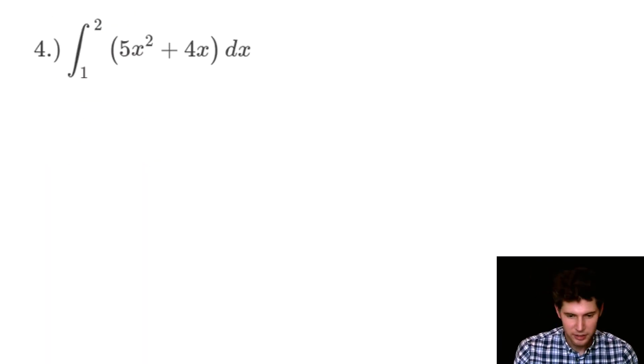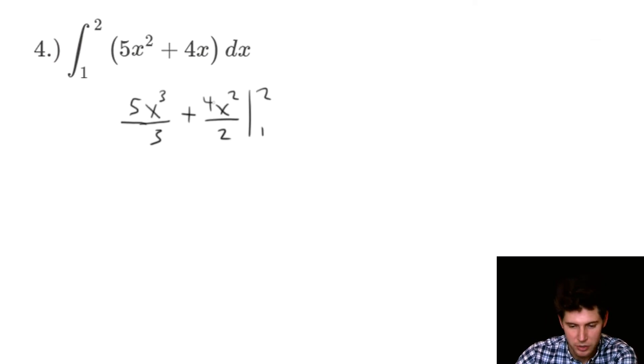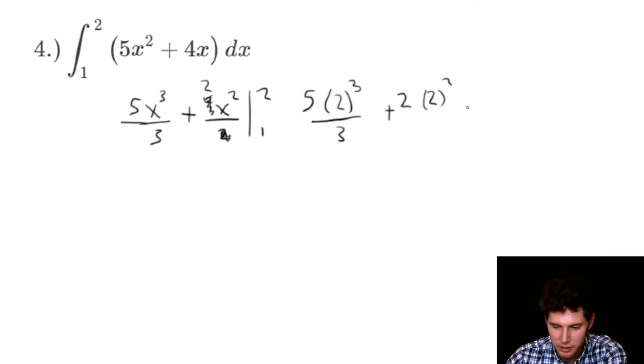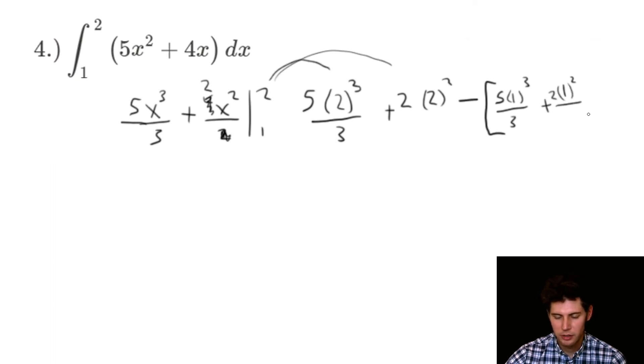Two more, a little bit harder, but not too bad. The integral from one to two of five x squared plus four x. So we're going to do each of these individually. So this x squared is going to become x cubed, and we're going to divide by three, and the constant five just chills there. Plus, and then this x becomes x squared, and we have the four there, and then we're going to divide by two. Now we're evaluating from one to two. This four and this two can reduce, so this can become a two, and now we can evaluate it.